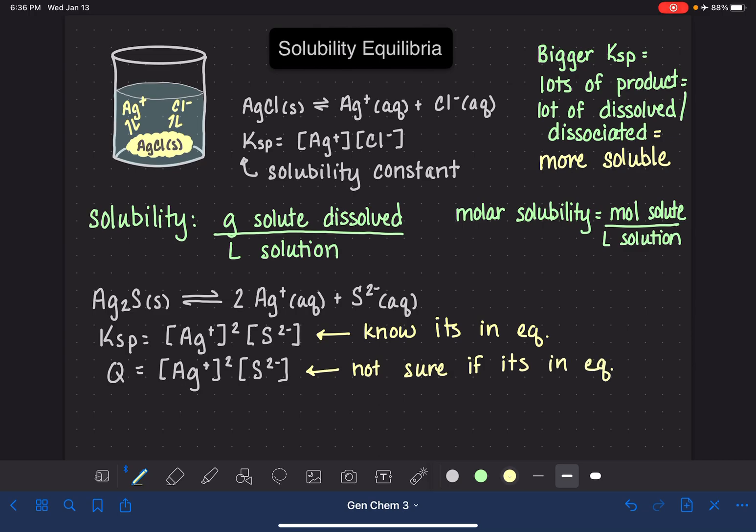We determine whether a system is in equilibrium or not by calculating Q and comparing Q to KSP. When Q is equal to KSP, in this case when Q is equal to any K, we know that that means that the system is in equilibrium.